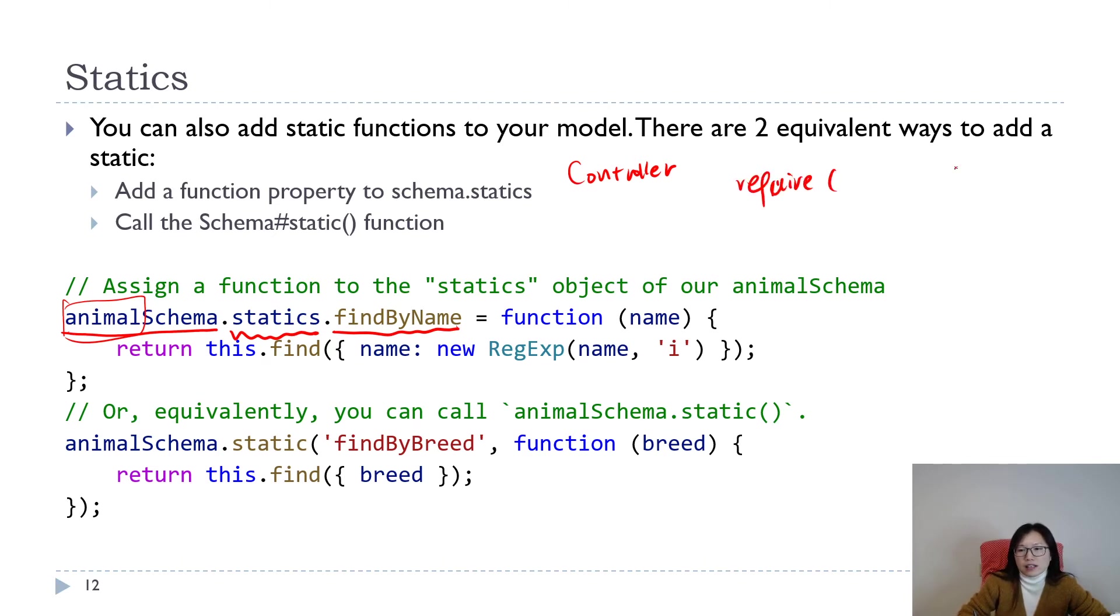In this case it's animal. Suppose you require this model file, animal.js, which contains this information. Then using const animal, because it's a model, how to call this findByName? You just use animal.findByName. This function asks for one name, then you just give a name like findByName which contains Tina, then you will return all the animals.